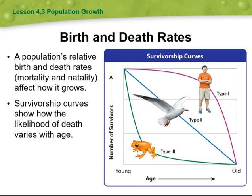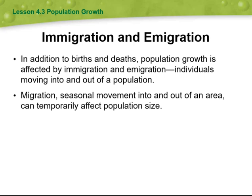Survivorship also refers to the probability of an individual or group of individuals surviving to a certain age or stage in life. It is often used in the context of studying populations in biology. Survivorship curves help understand patterns of survival and mortality within a population over time, and can be influenced by factors such as age, environmental conditions, and genetic traits. This analysis is valuable in studying population dynamics and provides insights into life expectancy and mortality rates.